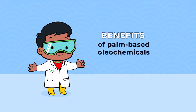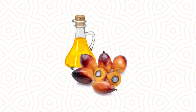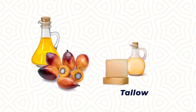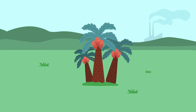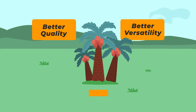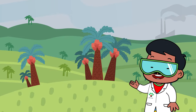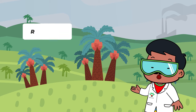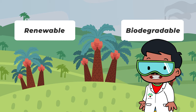Palm-based oleochemicals are fatty acids from palm oil and palm kernel oil that can readily substitute tallow and coconut oil respectively. Other established advantages are they offer better quality, versatility, and as a vegetable oil, palm-based oleochemicals are acceptable by all religions. Moreover, palm-based oleochemicals are renewable and biodegradable, ensuring cleaner waste disposal thus contributing towards a healthy environment.